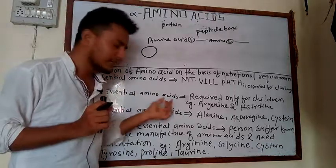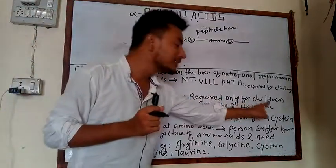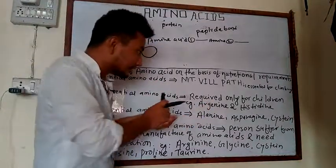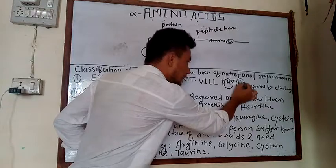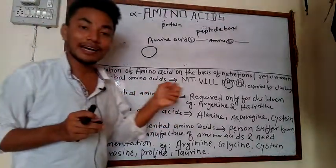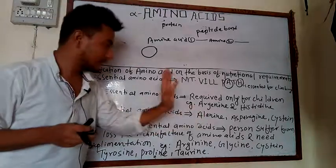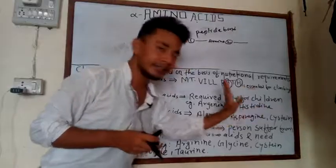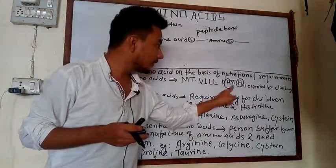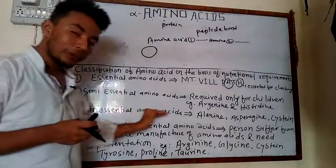The second type is semi-essential amino acids. These are amino acids required only for children, because a child's body cannot manufacture them. The examples are arginine and histidine. These cannot be prepared in children and must be obtained from diet, but in adults the body can produce them itself. So arginine and histidine are called semi-essential amino acids.